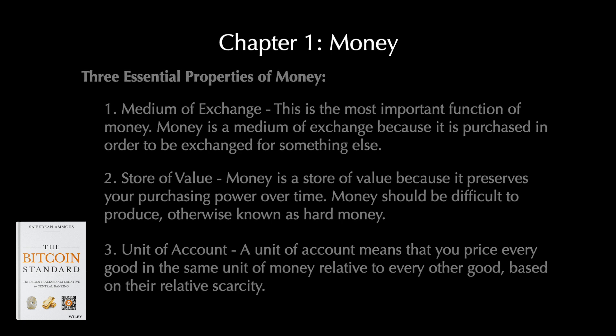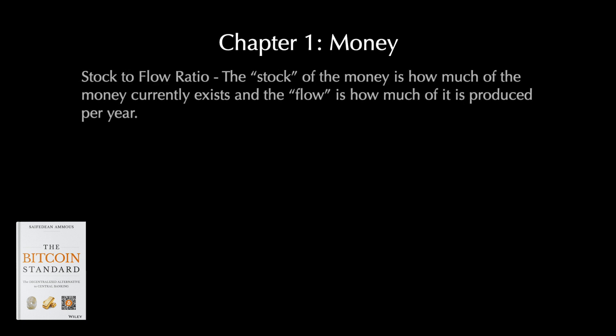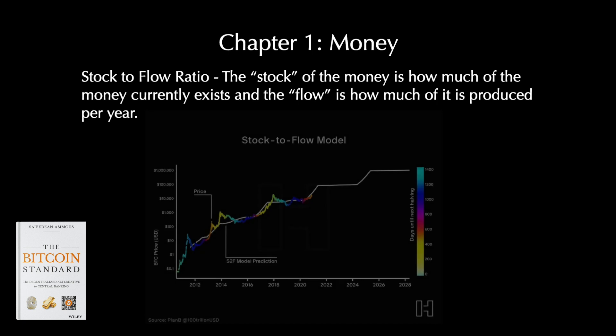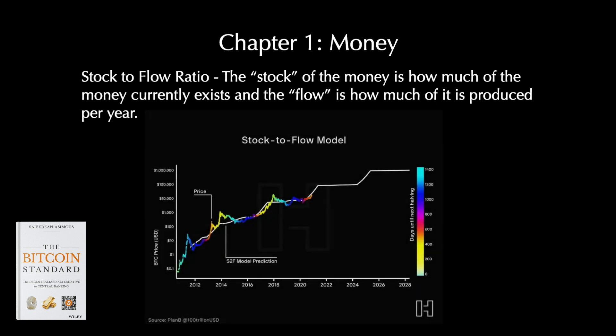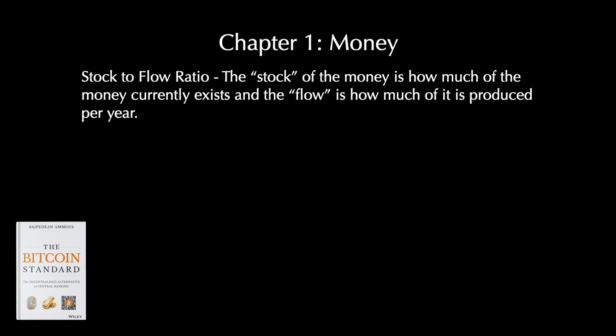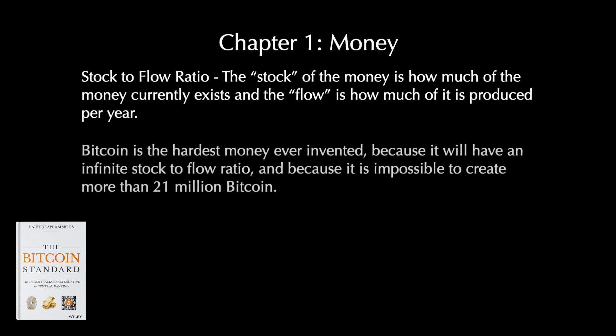A good measure of the hardness of money is its stock-to-flow ratio. The stock is how much of the money currently exists, and the flow is how much of it is produced per year. Think of stock as all the gold in all vaults around the world, and the flow as how much gold is mined per year. It is no coincidence that gold was chosen as money — it was chosen because it had the highest stock-to-flow ratio, meaning it was the hardest asset to create more of relative to its existing supply. The best money has a high stock-to-flow ratio. Bitcoin is the hardest money ever invented, because it will have an infinite stock-to-flow ratio, and because it's impossible to create more than 21 million Bitcoin.